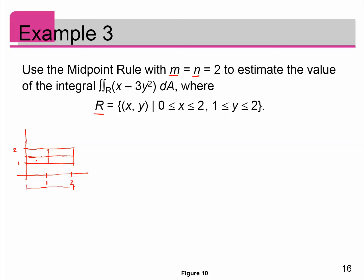Now I need to find the midpoint of each sub-rectangle. In the x direction, the midpoints are 1/2 and 3/2. In the y direction, the midpoint of the interval from 1 to 1.5 is 5/4, and the midpoint of the interval from 1.5 to 2 is 7/4 — just average the endpoints: 1.5 and 2 gives 1.75, or 7/4.